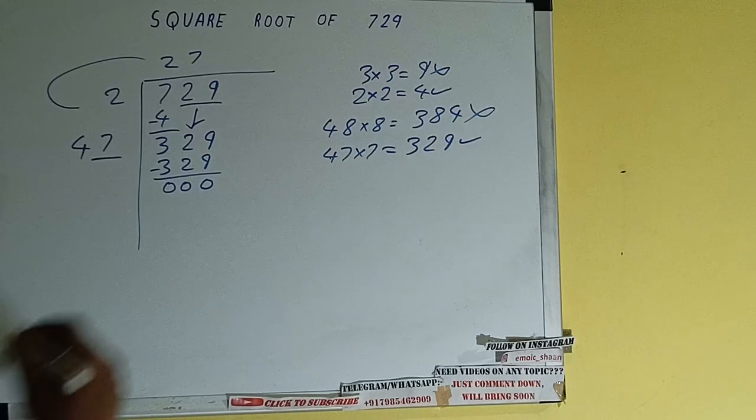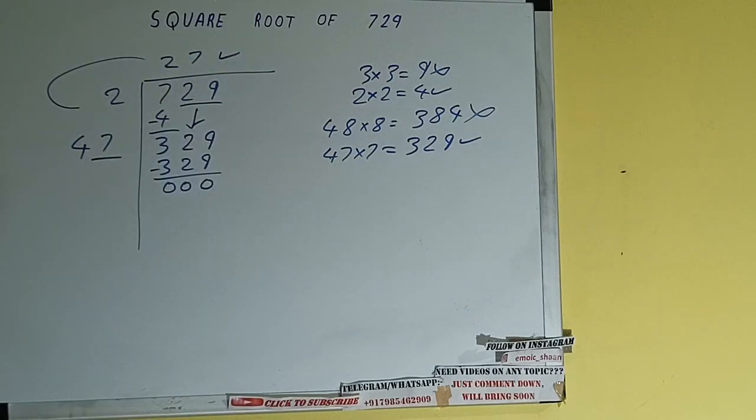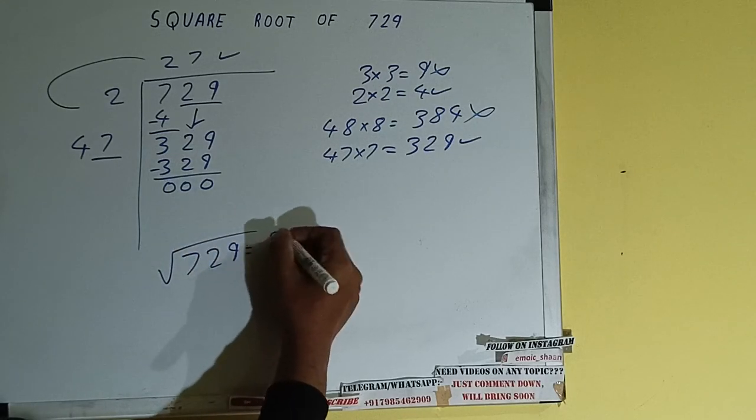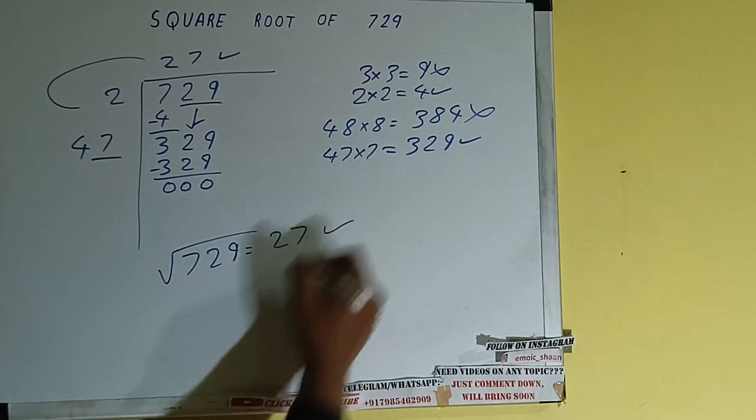Once we get 0, what is in the quotient will be the answer. That is 27. So square root of 729 will be 27. That will be the answer.